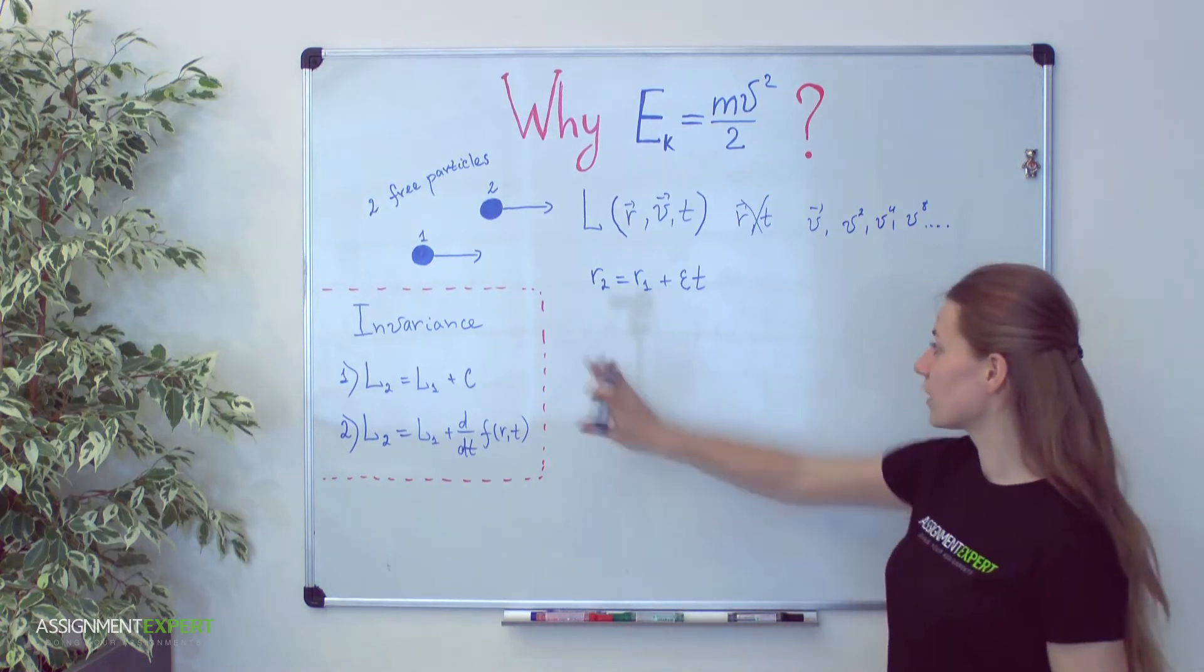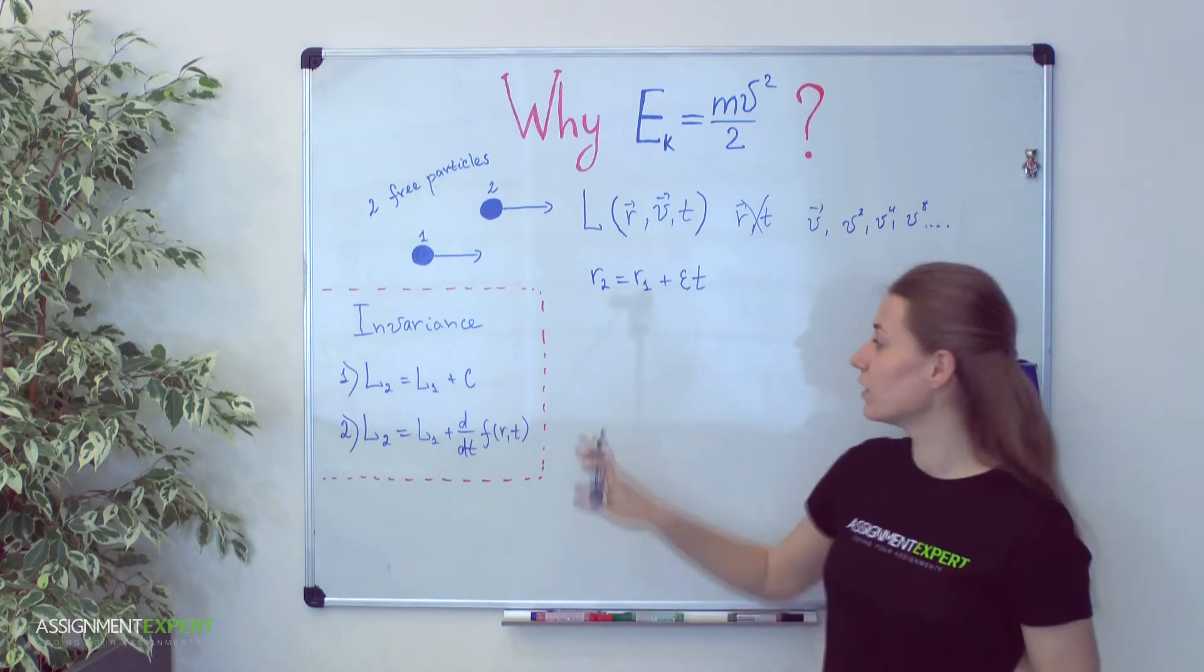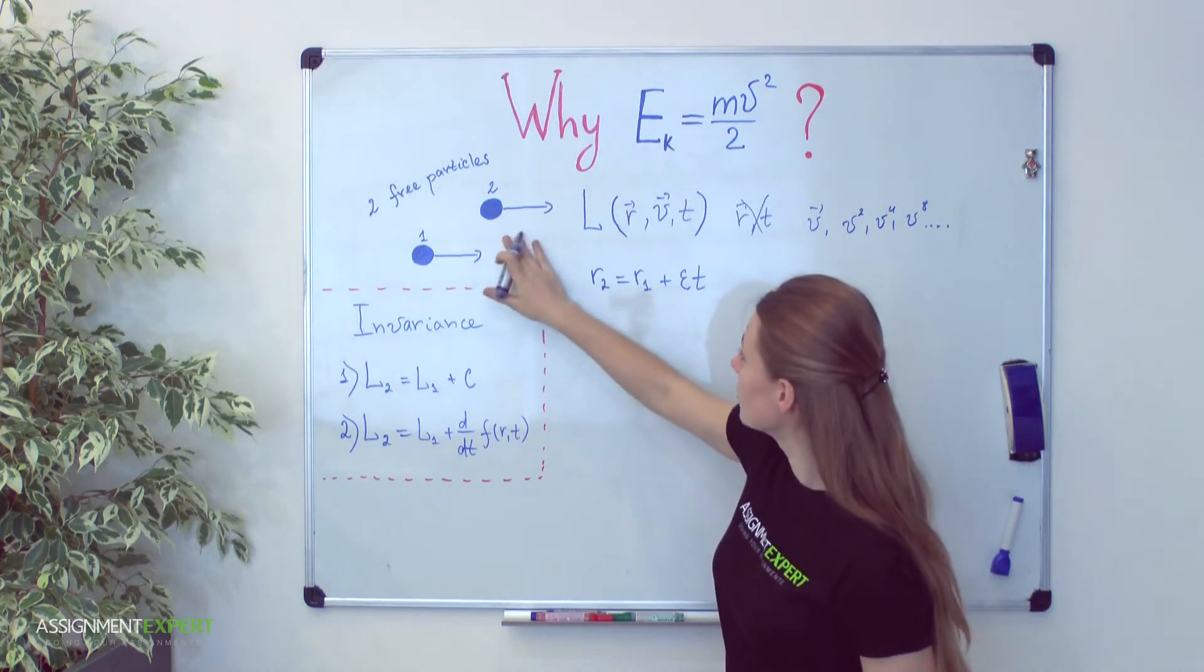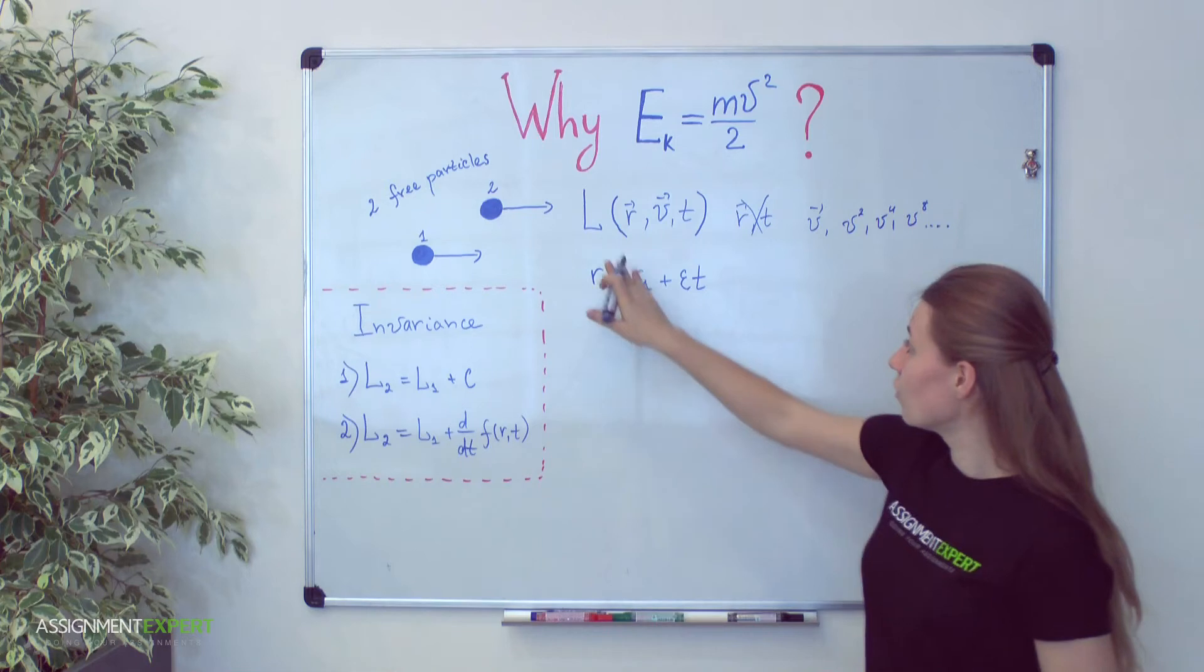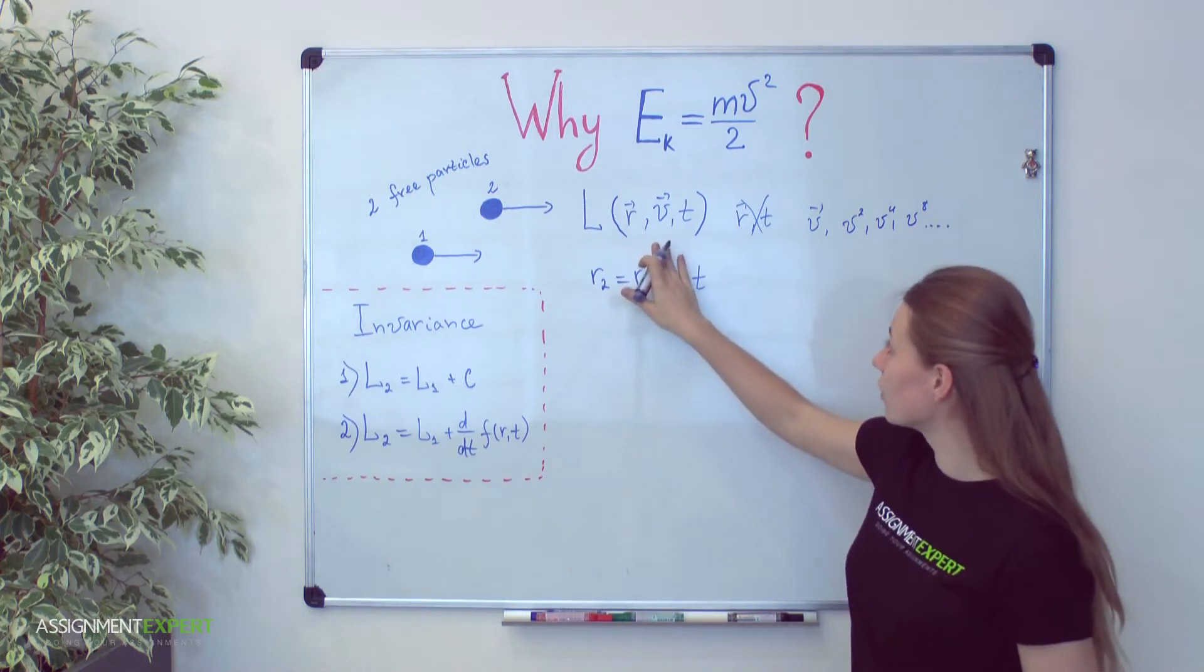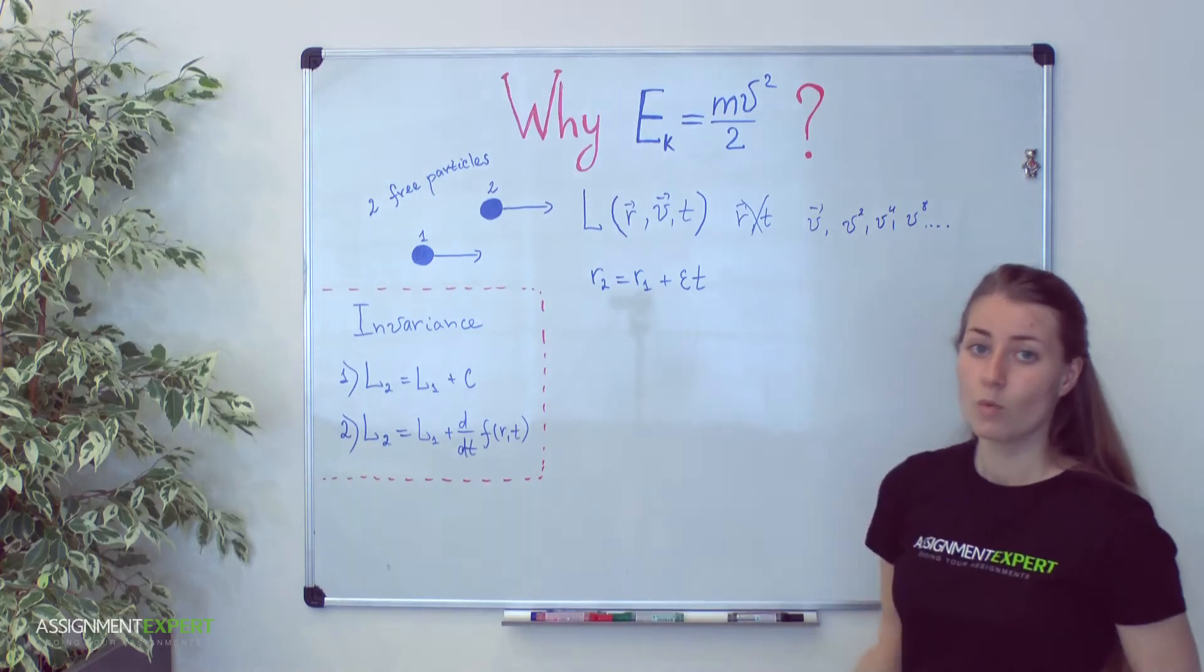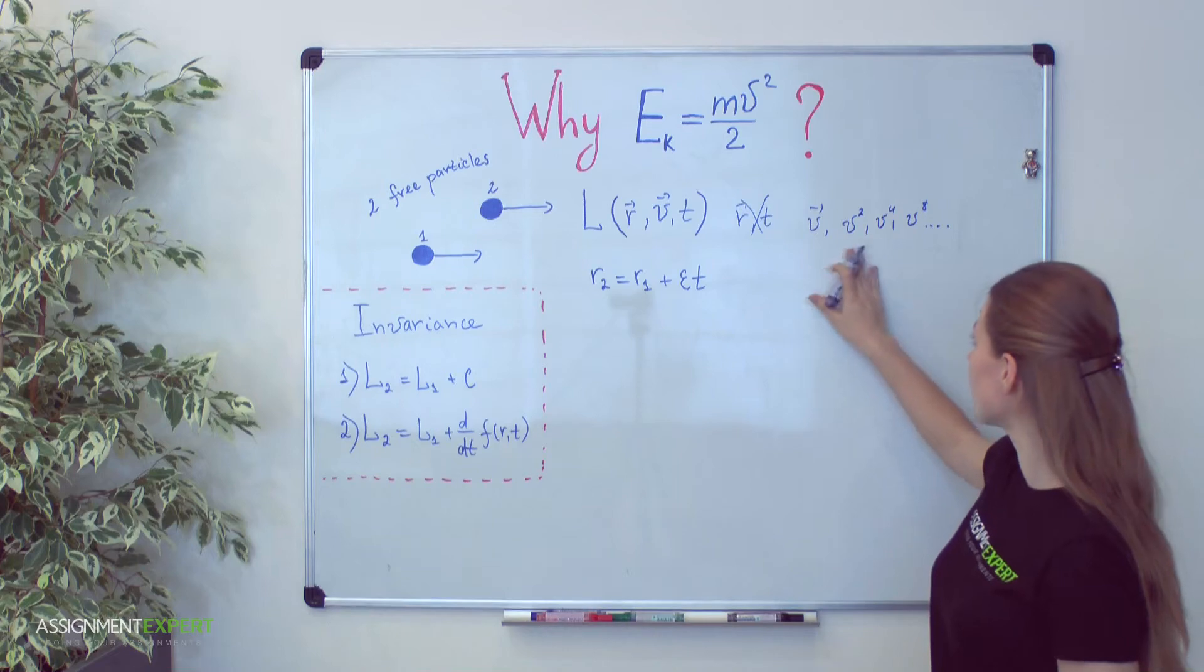To do it let's recall famous Galilean transformations. We know that according to principle of Galilean invariance in every system the laws of motion should be the same. Therefore, we should choose such Lagrange function which will generate for us similar equations of motion.